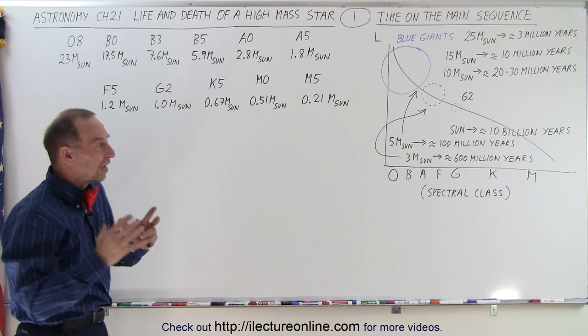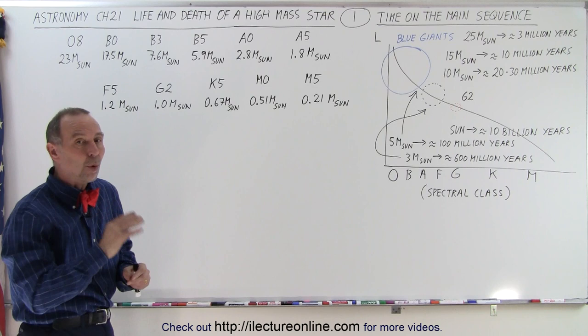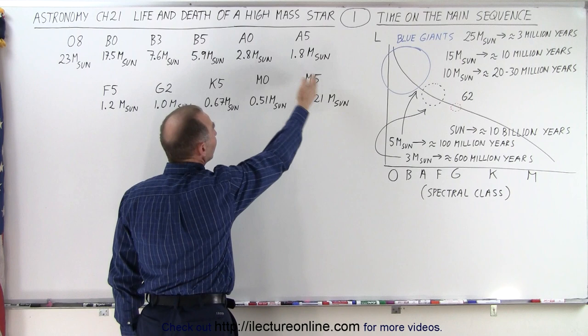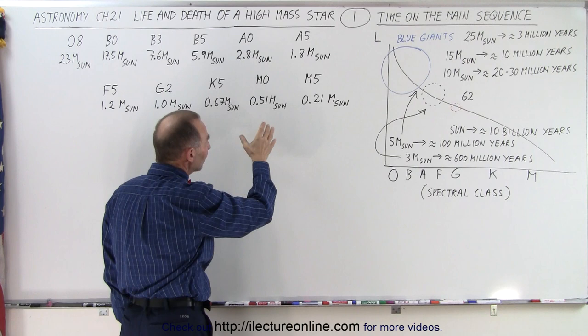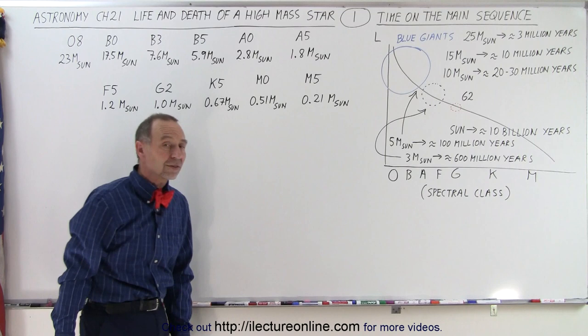Now realizing that the average size star in the Milky Way galaxy, about 250 billion stars, the average size star is about 0.4 times the mass of the Sun, which means the average type star is an M class star. So there's more M class stars than there are all the other class stars in the Milky Way galaxy. Notice that it's probably about an M2 or an M3 when we get down to about 0.4 times the mass of the Sun.